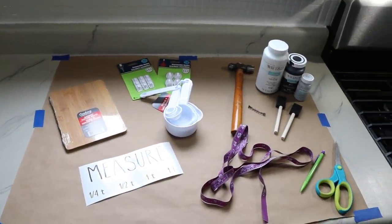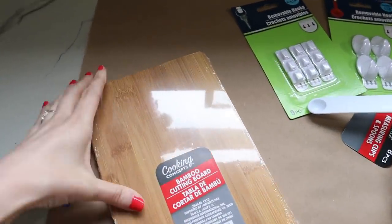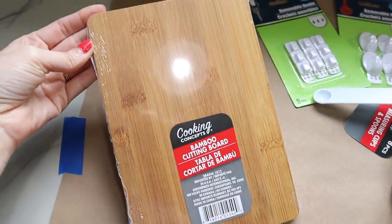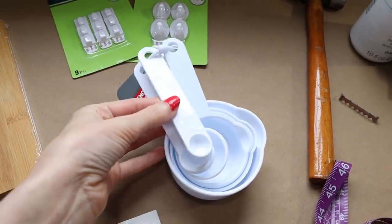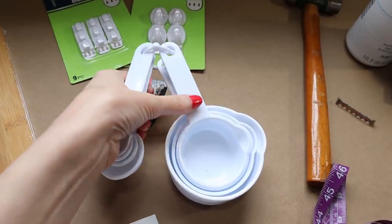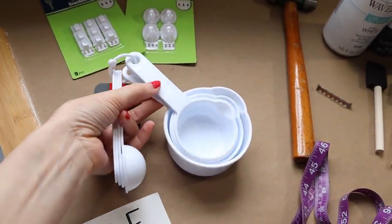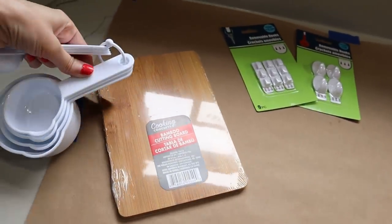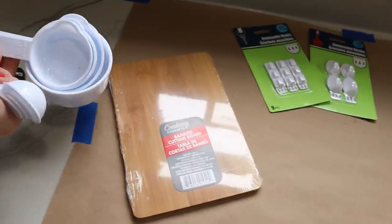Alright, here is a quick look at the supplies I have out for this project. The items from the Dollar Tree are a bamboo cutting board. You'll also need your measuring spoons and it comes in a big set like this with measuring cups too. We're going to be using the spoons today but you could copy and mimic this project and make one for your measuring cups as well.